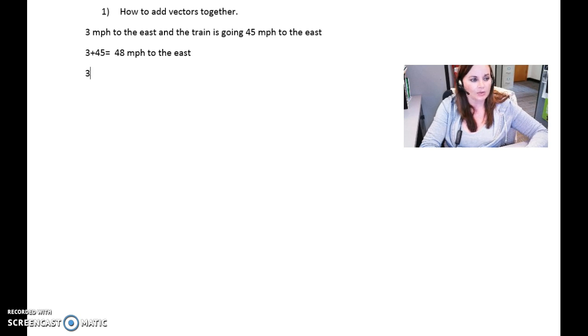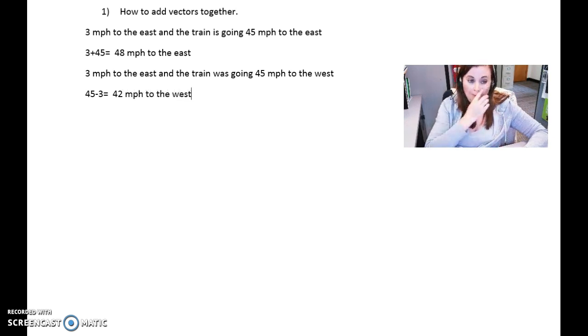However, if that person was traveling at 3 miles per hour to the east and the train was going 45 miles per hour to the west, then actually they're going in opposite directions. So you want to take the 45 minus the 3 in that case, and you end up with the person's rate of speed at a net 42 miles per hour to the west.